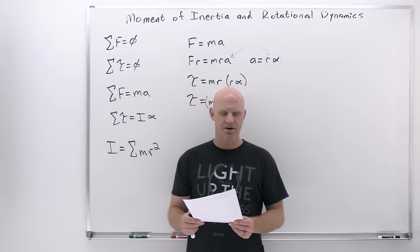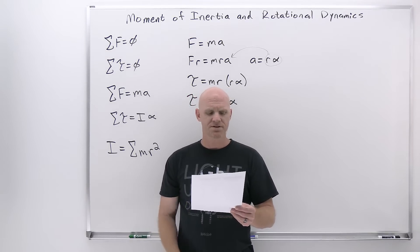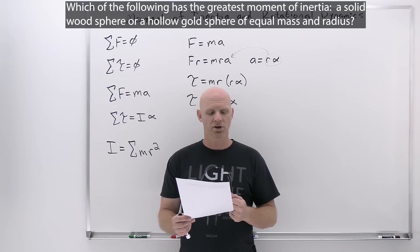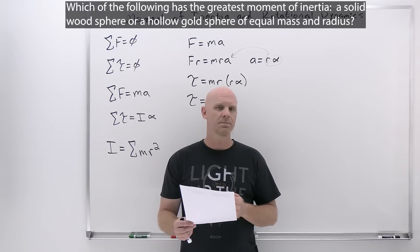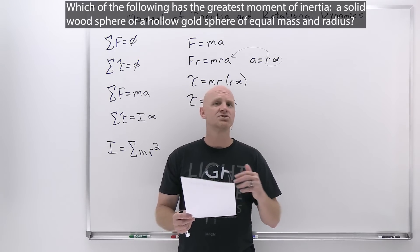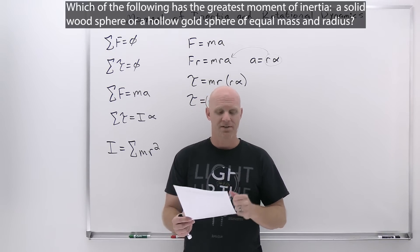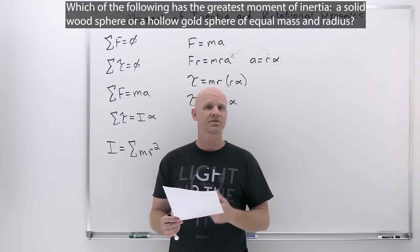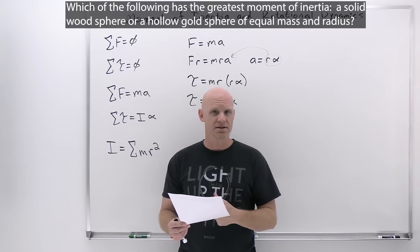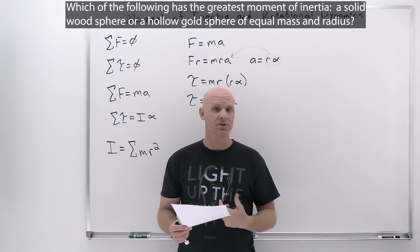The first question is conceptual: which of the following has the greatest moment of inertia — a solid wood sphere or a hollow gold sphere of equal mass and radius? Don't worry about the wood versus gold part; it's really about solid versus hollow. They have the same mass and same radius. Notice that for a hollow sphere to have the same mass and radius, it's going to have to be a more dense material — and gold is indeed more dense than wood.